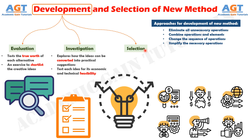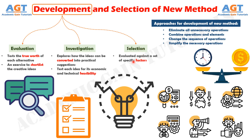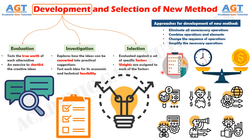Step 3: Selection. Each alternative needs to be evaluated against a set of specific factors. The most commonly selected factors are investment required, production rate, manufacturing cost per piece, and return on investment. Using a point system, weights are then assigned to each of the factors. Performance of each factor is then predicted for each alternative, followed by evaluation of each alternative against each specific factor. To select a preferred alternative, the points scored by each alternative against each specific factor are added, and the alternative scoring the maximum is selected.